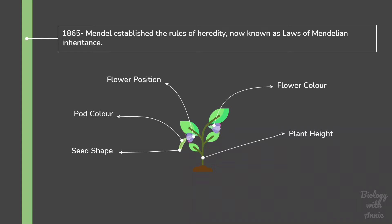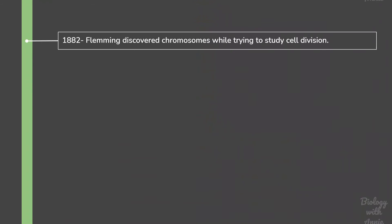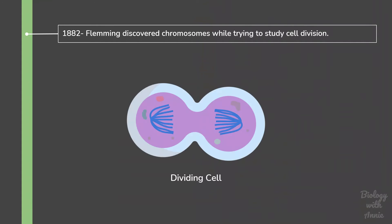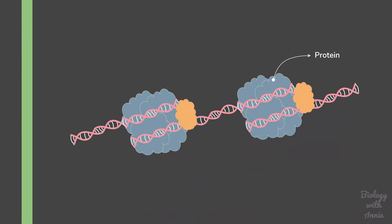After the discovery of chromosomes in 1882, scientists were able to establish that genes are located on the chromosomes. Chromosomes were observed to be thread-like bodies that partitioned into the daughter cells at the end of cell division. They are composed of two types of macromolecules: proteins and nucleic acids. For a long time, scientists believed that the genetic material was made up of proteins present in the chromosome, and DNA was simply thought to provide structural support.